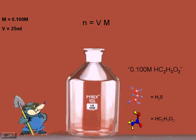In the problem given here, we are asked for the amount of solute in 25.0 milliliters of 0.100 molar acetic acid.